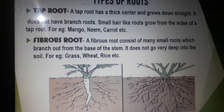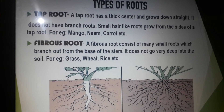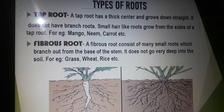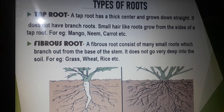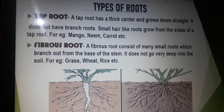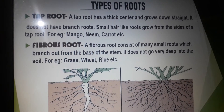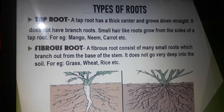Most tall trees have an extremely well-developed taproot system. Trees like mango, neem, carrot, pea, radish, and people have a taproot system.